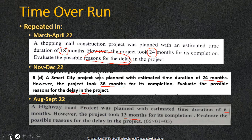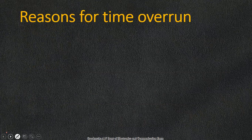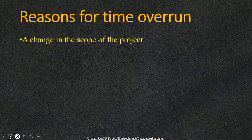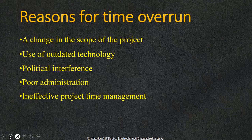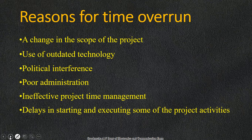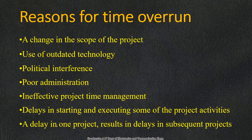Now let us look at the answer. We need to write the reasons for time overrun. The first reason is change in scope of the project, use of outdated technology, political interference, poor administration, ineffective project time management, delay in starting and executing project activities, and delay in one project resulting in delay in subsequent projects.